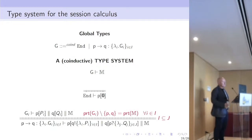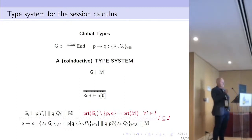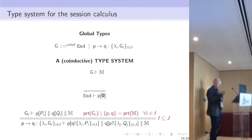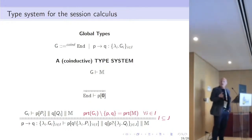The double bar stands for the co-inductive definition. The type system is extremely simple: it says that the empty session is described by the end global type, and the other rule says that if P and Q can exchange message lambda-i, then the global type describing the possible behavior of the whole system is of the form described in the conclusion.